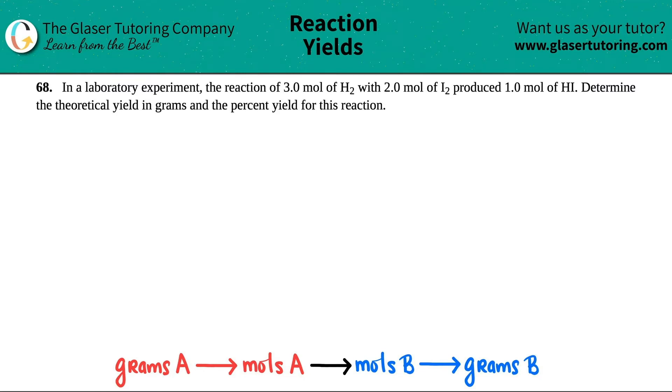Number 68. In a laboratory experiment, the reaction of 3.0 moles of H2 with 2.0 moles of I2 produced 1.0 moles of HI. Determine the theoretical yield in grams and the percent yield for this reaction.